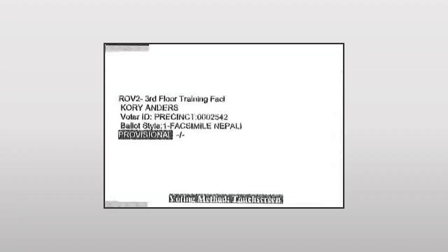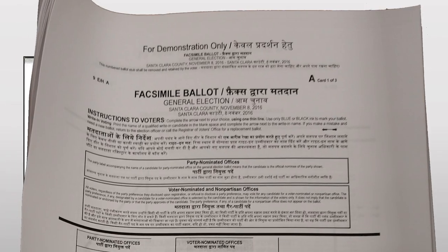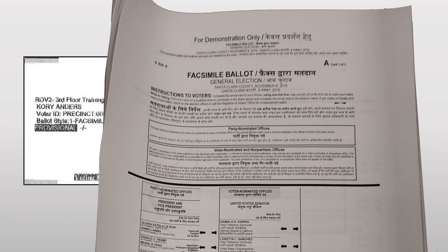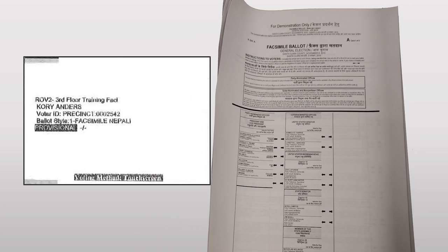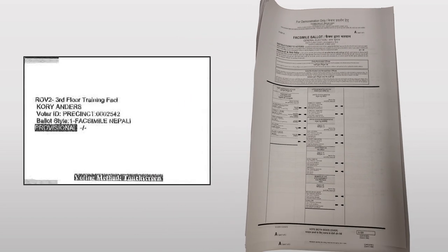If you encounter a label with 'facsimile' before the language, that means that we do not have the language available on paper ballots or on the touch screen. Instead, every vote center will have translations available for voters to use while they fill out an English-Spanish ballot. There are five languages where we will encounter this.